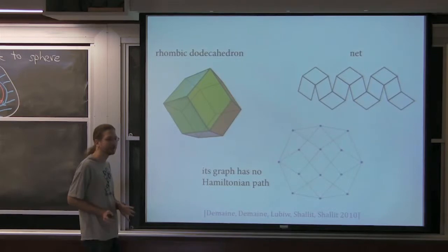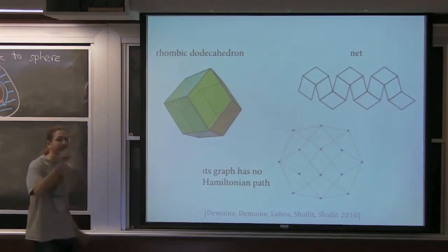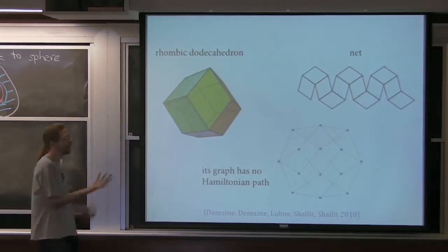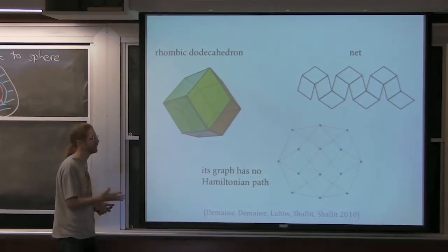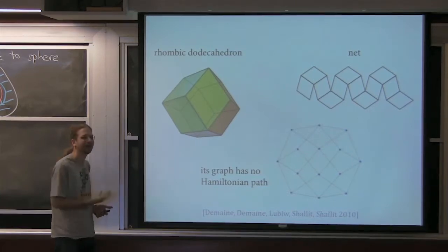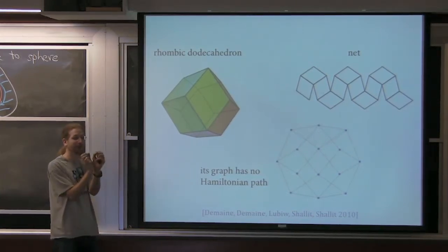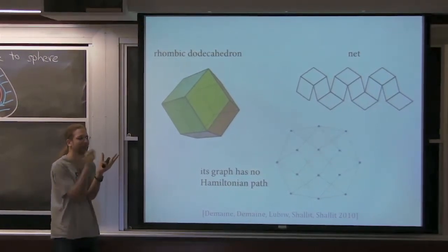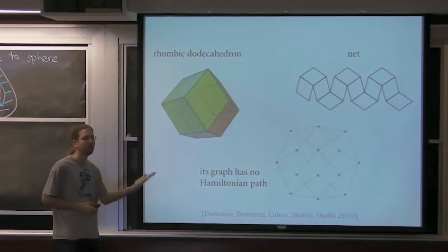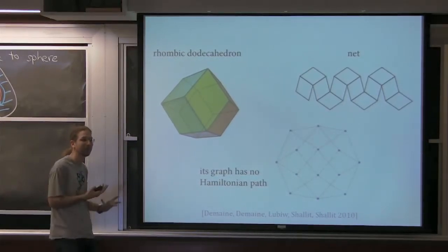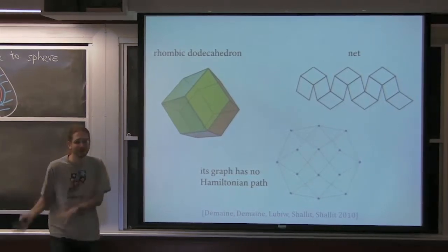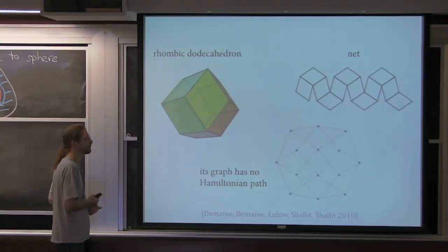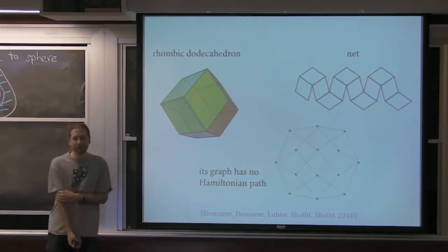The big open question is for general unfoldings: if you're allowed to cut anywhere on a convex surface, can you always find a zipper unfolding? We have star unfoldings, source unfoldings, sun unfoldings — but none of them are zipper unfoldings; they all cut along trees. Can you always convert a tree cut into a path cut? We've tried. It seems quite challenging. The open problem: does every convex polyhedron have a general zipper unfolding?